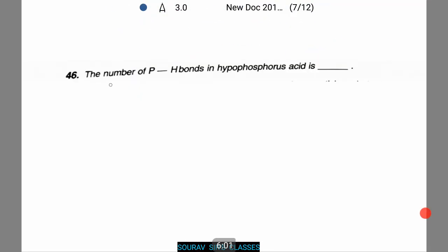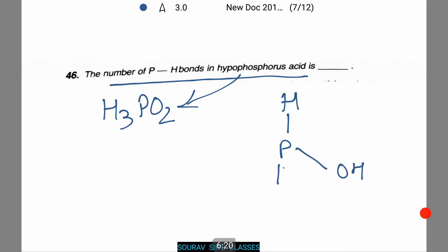Now we need to find the number of P-H bonds in the hypophosphorous acid. The formula of hypophosphorous acid is H3PO2. Thus let us draw the structure: H, P, OH, double bond O, single bond H. Thus it has 2 P-H bonds. Thus the answer out here will be 2.